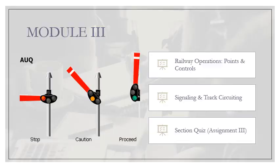Module 3 deals with the railway signaling system. This system helps Indian Railways run without any delay or accidents — these are the master brains behind the smooth functioning of our railway system. In this module we will discuss railway operations, points and controls, signaling, and track circuiting. Towards the end there will be section queues considered as Assignment 3.